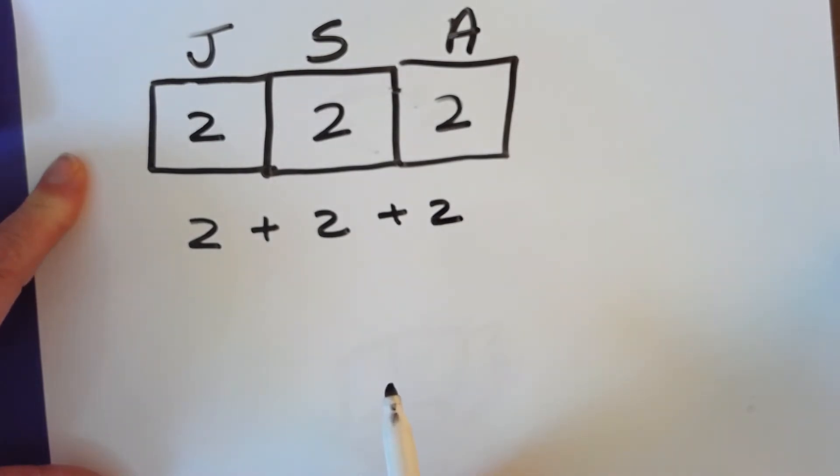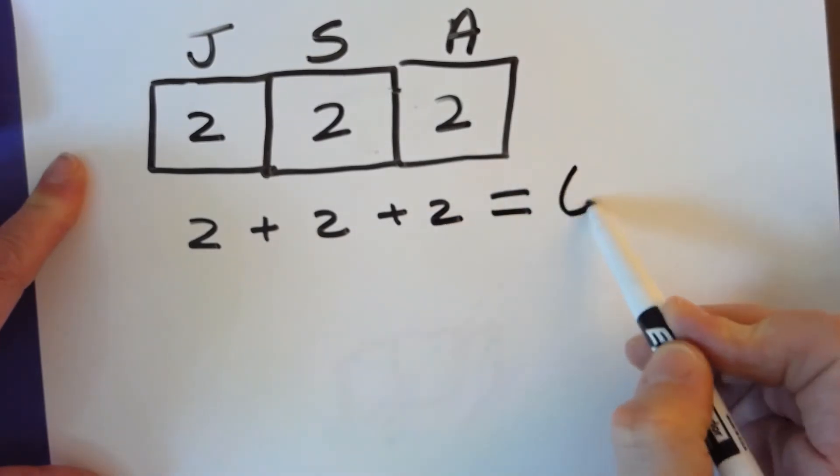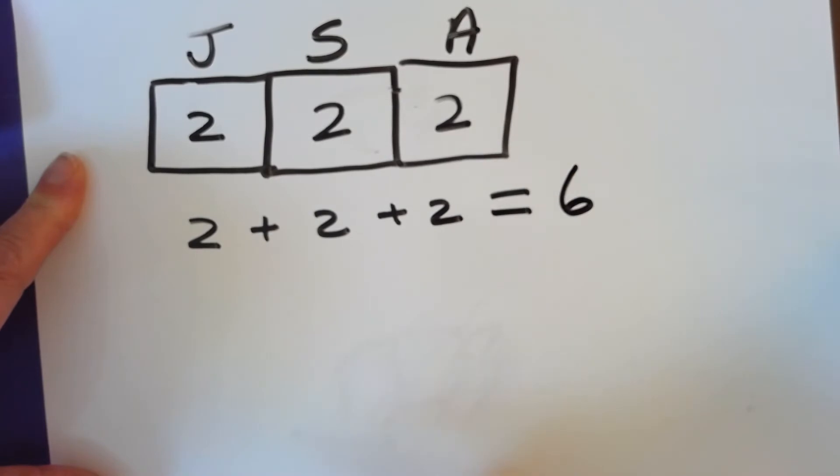So let's read this equation. Two plus two plus two equals, and we can skip count by counting by twos. Two, four, six. Okay, six apples total. We are adding by twos.